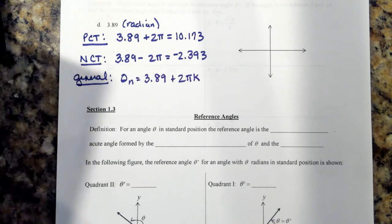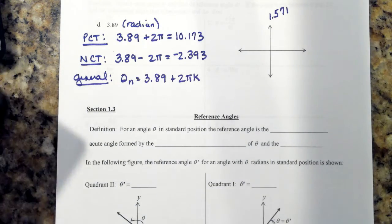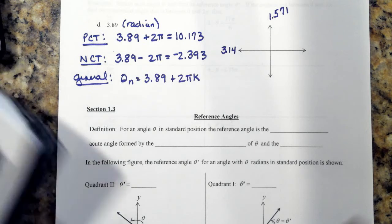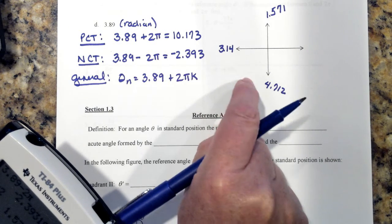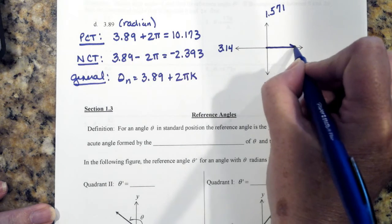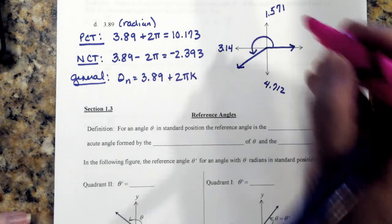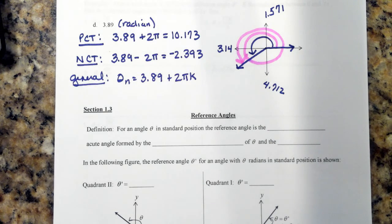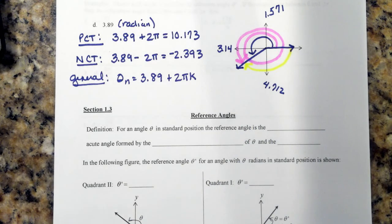When I sketch 3.89, remember the quadrantals: pi over 2 is about 1.571, pi is about 3.14, and 3 pi over 2 is 4.712. Since 3.89 is between 3.14 and 4.712, the terminal side falls in quadrant 3. My positive coterminal angle is one revolution around and then another 3.89 radians. My negative coterminal angle goes in the clockwise direction. That is how we find coterminal angles.